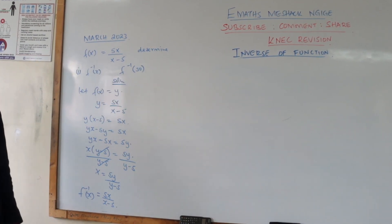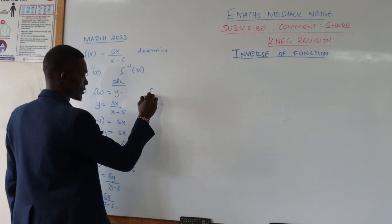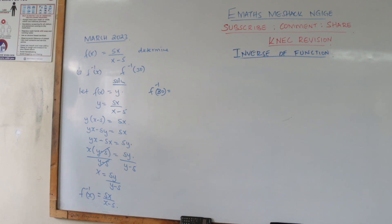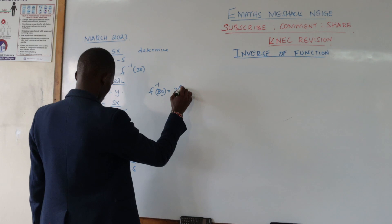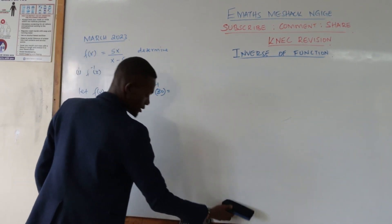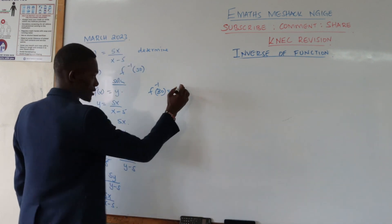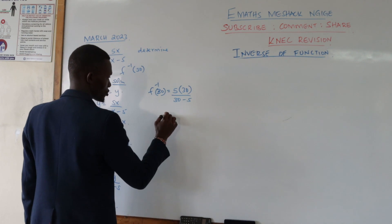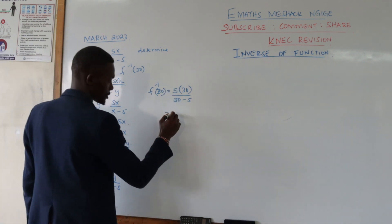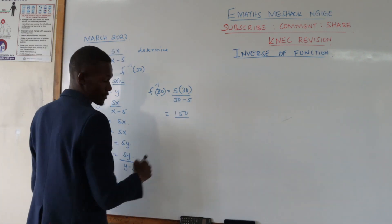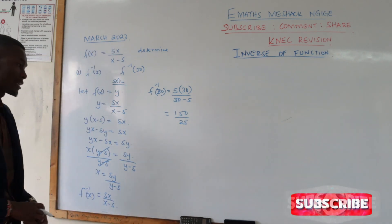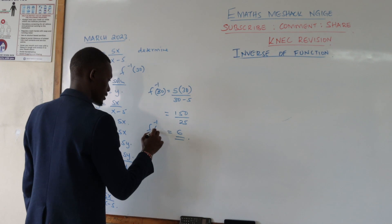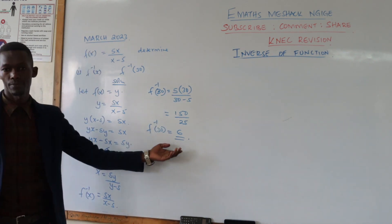Therefore, the inverse of f(x), which is f inverse of x, is found by replacing y with x: f inverse of x equals 5x all over x minus 5. That is the inverse of this function. For the second part, we replace x with 30. So we have 5 times 30 over 30 minus 5, which is 150 over 25. And 25 goes into 150 six times. Therefore, f inverse of 30 equals 6.